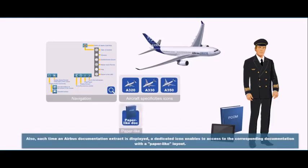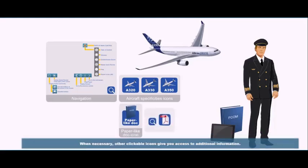Also, each time an Airbus documentation extract is displayed, a dedicated icon enables access to the corresponding documentation with a paper-like layout. When necessary, other clickable icons give you access to additional information. You can now start with the first module of the course.